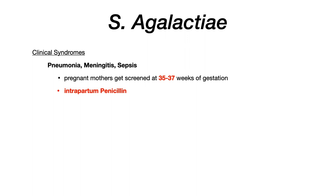Pregnant mothers should be screened for strep agalactiae at 35 to 37 weeks of gestation using a vaginal and rectal swab. If that swab detects the presence of strep agalactiae, you would then treat them with intrapartum penicillin. A couple of really high yield things for exams: 35 to 37 weeks is when you test for this. And the treatment — basically the only treatment you need to memorize — is intrapartum penicillin if the swab is positive.